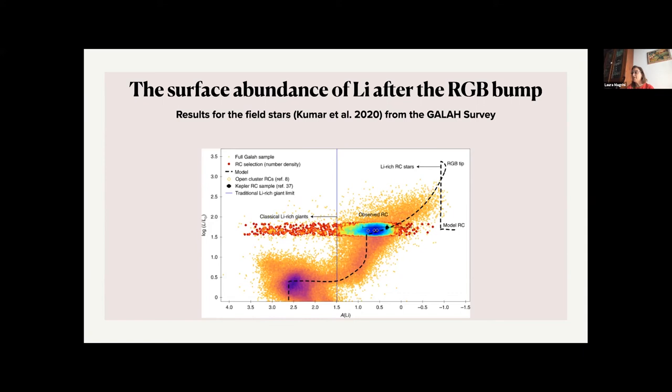So we have on the left the main sequence turnoff, then we have the evolution toward the giant phase, and then we have the first dredge-up, the ascending phase toward the tip of the RGB. And where we have the model, RC, is the place in which models of stellar evolution predict the red clump stars to stay.